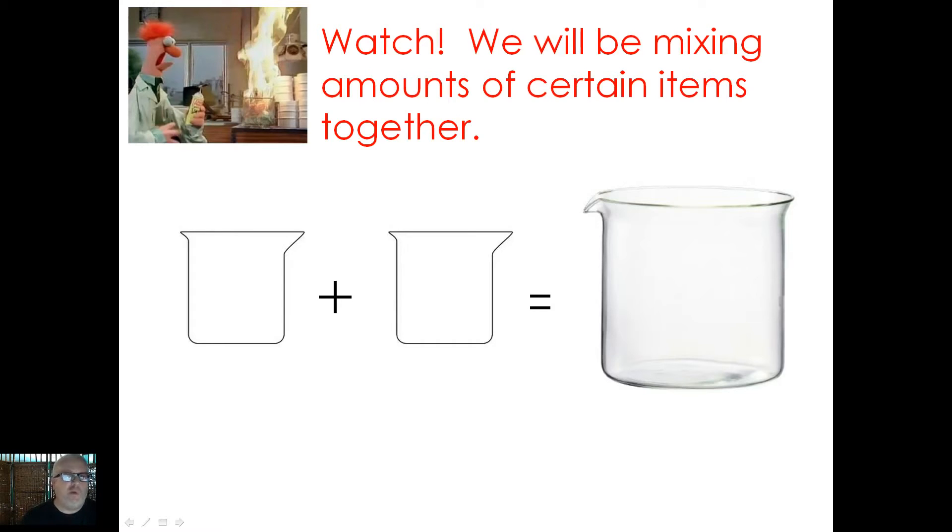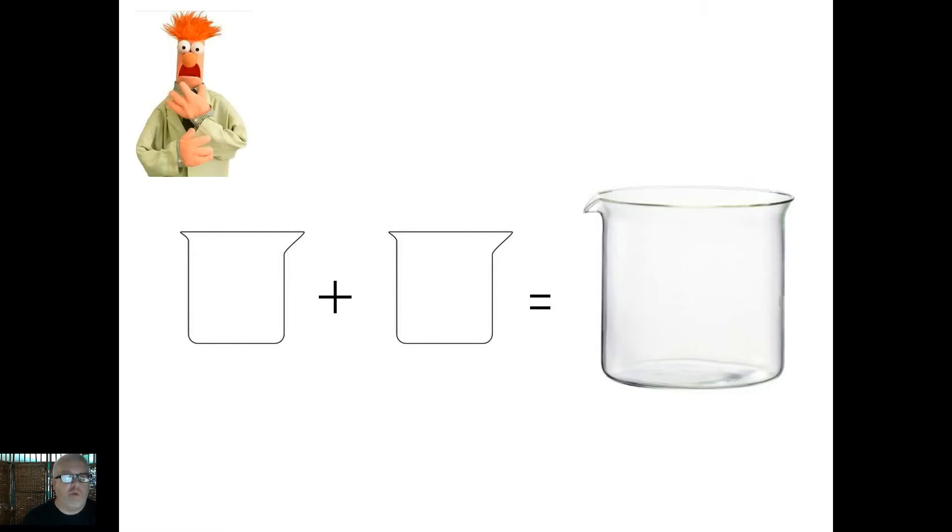We're going to be mixing different amounts of certain items together. We're not going to really know what those amounts are typically, but we know what our goal will be. For example, we're going to have some amount of this item plus some amount of this item, and together we're going to have a certain amount. Of course, the sum of those amounts would be what would be in this container here. We made this a small container, a small container, and then a large container so we can see that that's the culmination of what we're working toward.